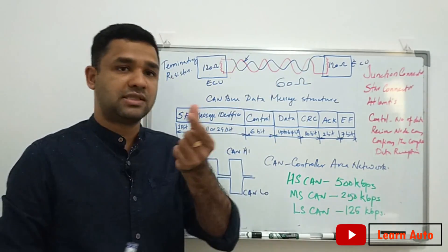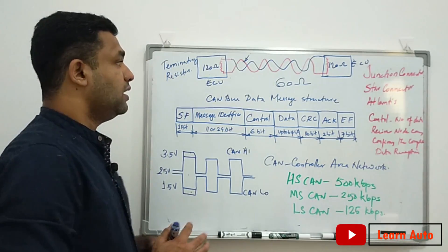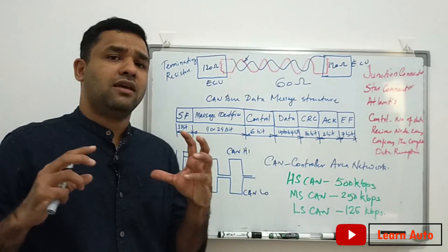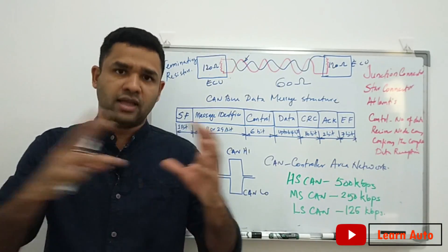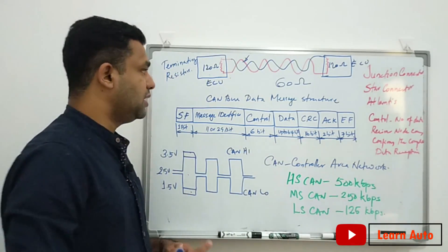One terminated resistance is 120 ohm, and since the CAN communication uses two resistors in parallel, the total resistance is 60 ohm.